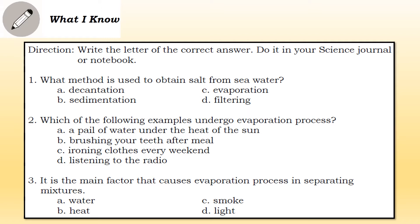Number two: Which of the following examples undergoes the evaporation process? A) A pail of water under the heat of the sun, B) Brushing your teeth after a meal, C) Ironing of clothes every weekend, D) Listening to the radio. Number three: What is the main factor that causes the evaporation process in separating mixtures? A) Water, B) Heat, C) Smoke, D) Light.